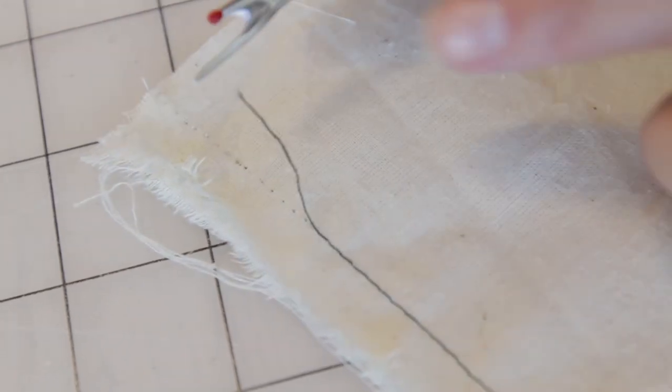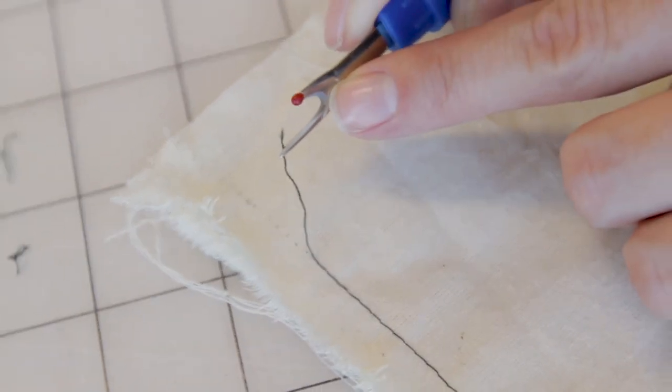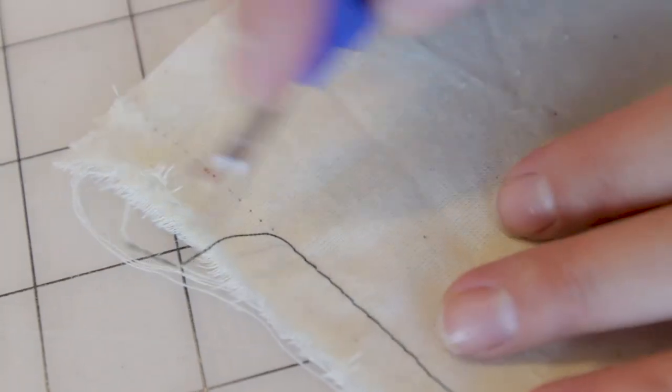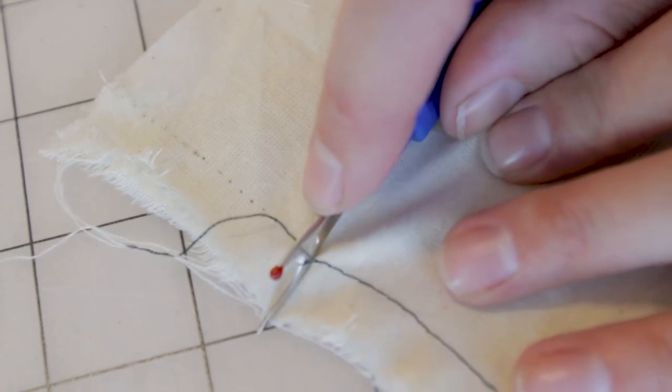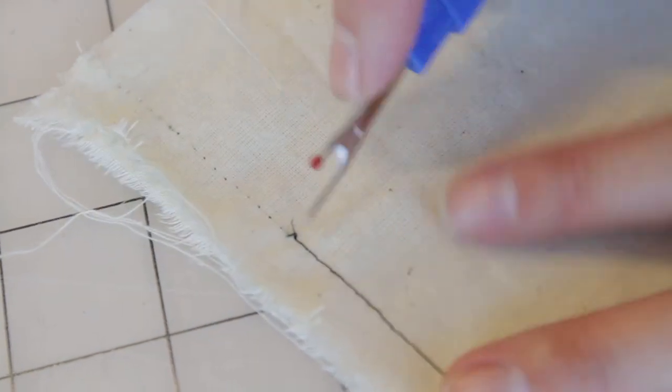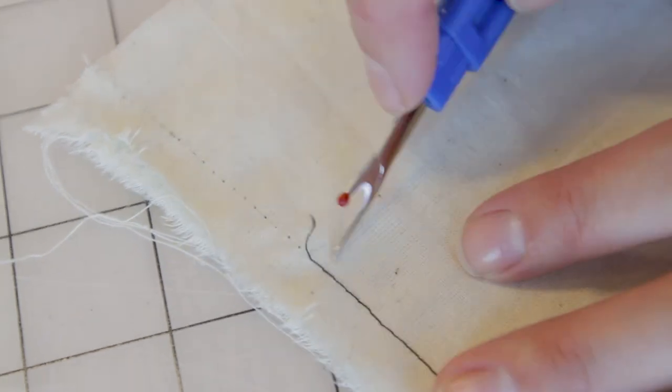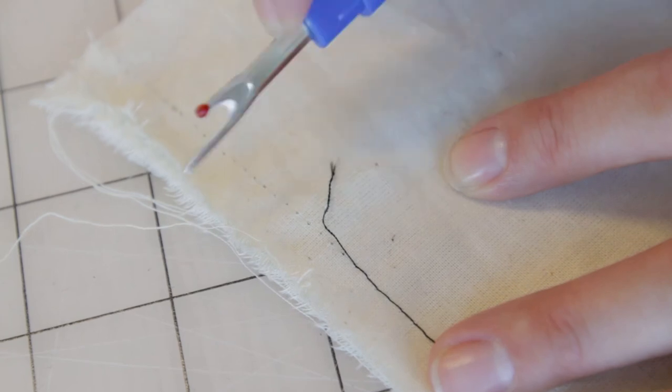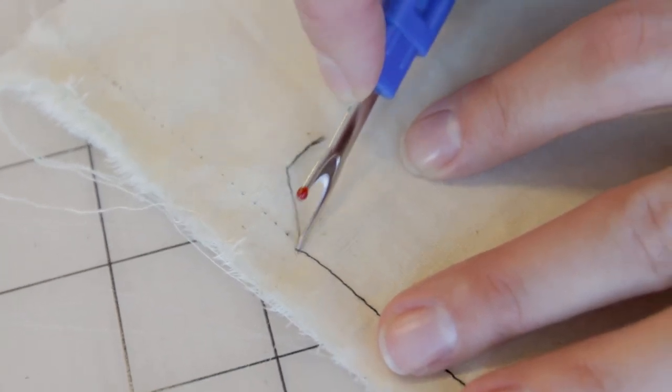There's also a razor blade right in the middle of the seam ripper, so if you push really hard it will cut the thread. So let's say let's go down a little, we're going to give it a little more tension. Notice how it cuts it and then you could pull it. So you could do it a few different ways. And you can keep going and going and going.